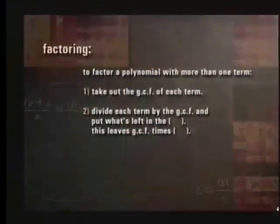Now, as we left off in our last lesson, we were talking about factoring the greatest common factor out of polynomials. So let's go back to the graphic there real quick and just touch on that. To factor a polynomial with more than one term, take out the greatest common factor, divide each term by that greatest common factor, and put what's left in the parentheses. So what you end up with is the greatest common factor times the parentheses.